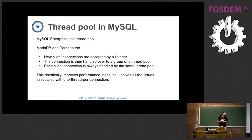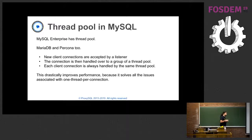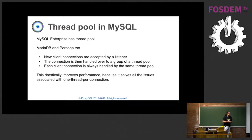The way it works is that all new connections are accepted by one listener, and then this listener passes the connection to the thread pool, and that specific thread pool is the one that is going to handle the connection until the connection disconnects. Because of the use of the thread pool, performance gets a lot better.